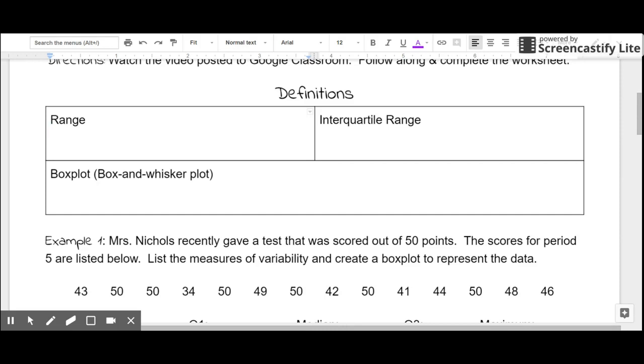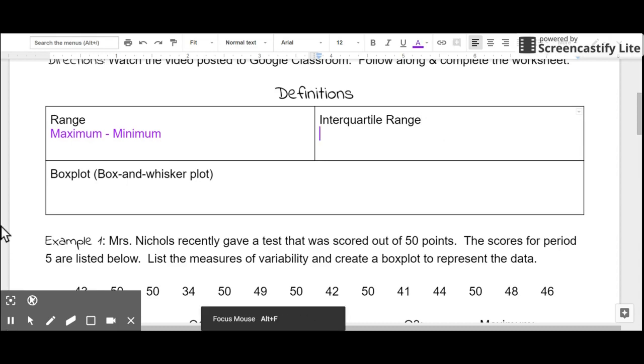You know from previous lessons that the range is the maximum minus the minimum of a data set. So the range describes how far the data is spread out. We're also going to talk today about the interquartile range. The interquartile range works a little more specifically than the range. It looks at the middle half of the data and how spread out that data is. To calculate the interquartile range, we'll take the third quartile, which I'll describe as Q3, and subtract the first quartile, which is Q1.